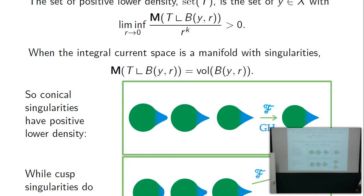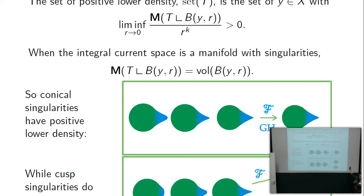If there is a conical singularity, the limit space is an integral current space — a manifold with a conical singularity. We required X to be the set of positive density of T: the mass of T restricted to the ball B(y,r) divided by r^k, taken as a limit, must be positive. For a manifold with singularities, mass of T on B(y,r) is just the volume. A conical singularity has a positive density limit, so the cone tip is included in X. But for a cusp, you don't include the cusp point — it's not complete.